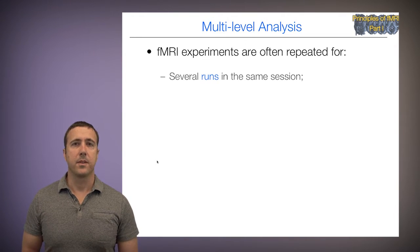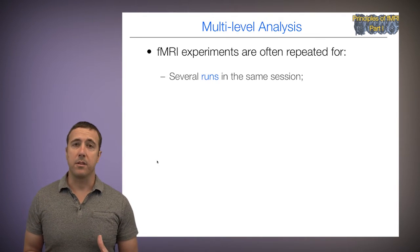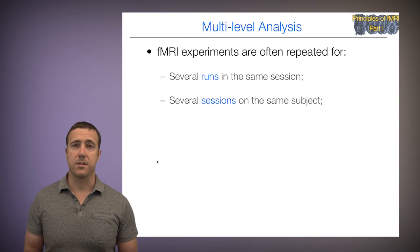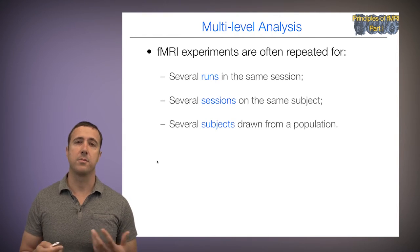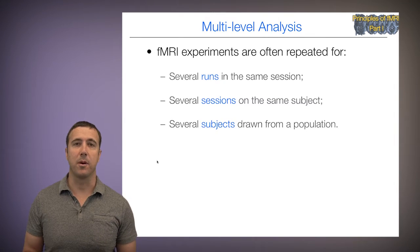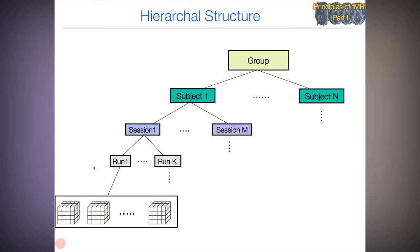In a multi-level analysis, FMRI experiments are often repeated for several runs in the same session, several sessions on the same subject, and several subjects drawn from a population. Just to remind us, we've seen this before, but this is the hierarchical structure of the data.